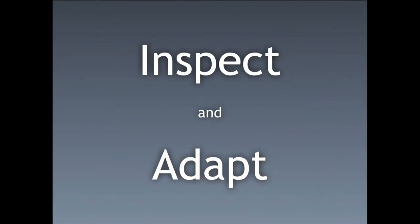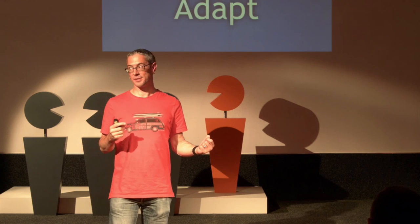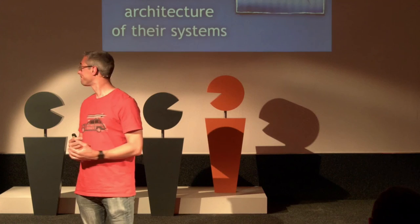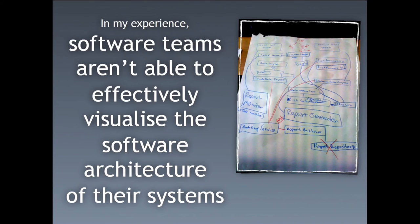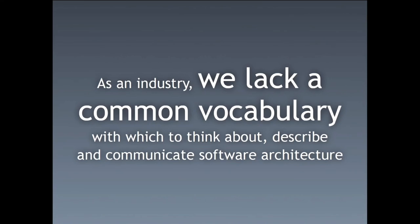When we talk about agile, we talk about the inspect-and-adapt loop — that's the basis behind retrospectives. We can apply this to software architectures. How do we inspect an existing software system? We can draw some pictures — either by reverse-engineering the code to visualise the architecture, or by getting people in a group. It turns out this is really, really hard. Over the past eight years I've been running architecture sketching workshops, and everybody struggles with this exercise, essentially because we lack a common shared vocabulary to think about, describe, and visually communicate software architecture.